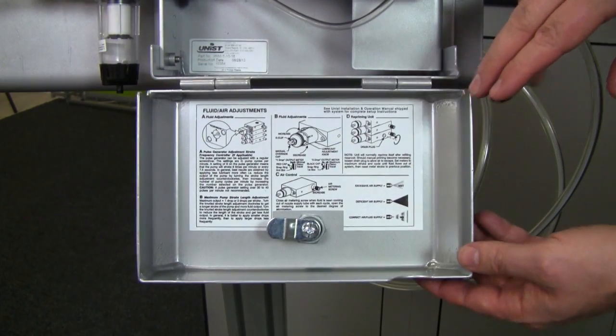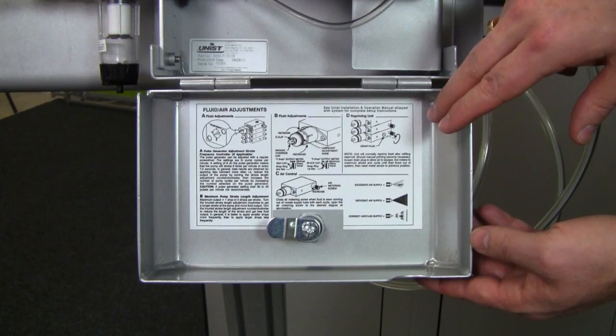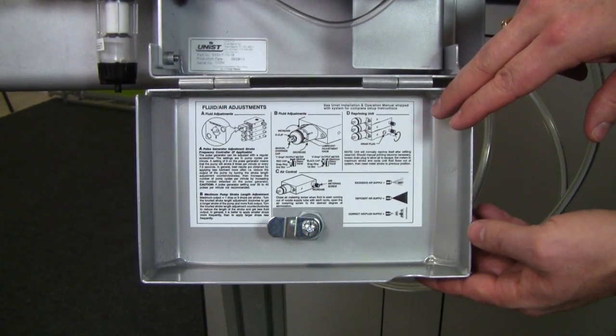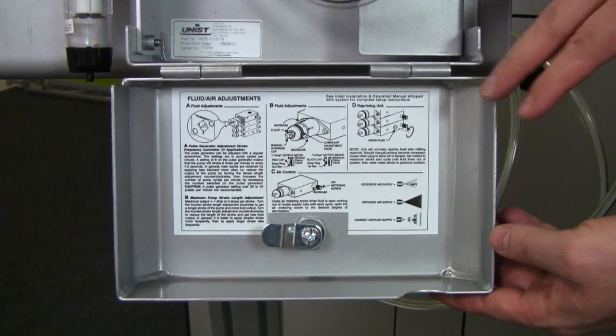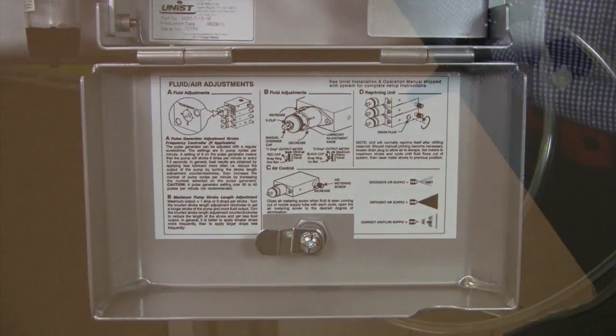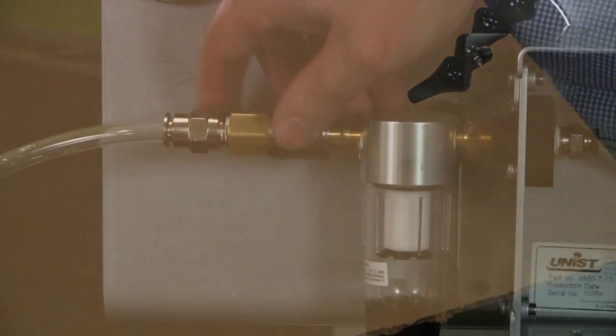Now in the cover here we have a fluid air adjustments label which reviews the settings I just talked about. Now that we've reviewed the system settings, let's turn the system on and see what the cool lubricator is meant to do.